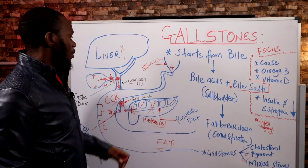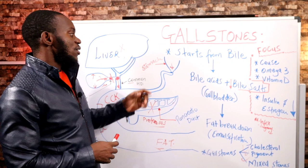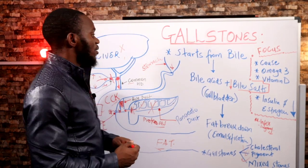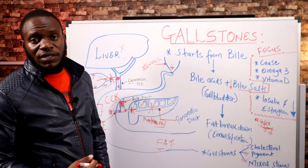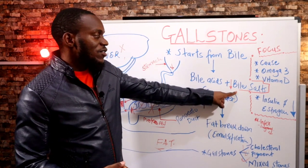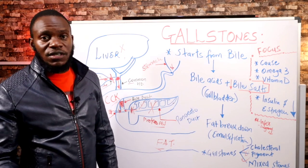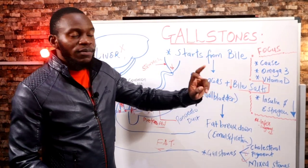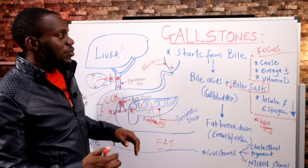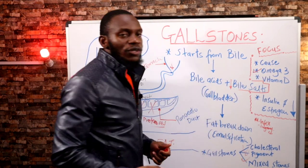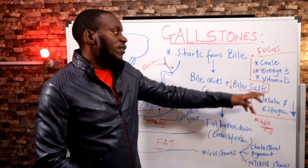Now, if you already have gallstones, what do you do? Remember, bile salts are very important in preventing cholesterol crystallization, which causes gallstones. If you augment bile salts, your chances of getting gallstones are minimal. First, fasting is very important — it helps concentrate bile salts, helps heal the liver, and clears inflammatory conditions. Second, omega-3: eat fatty meat, fatty fish, seafood — all these have high content of omega-3, which is helpful in clearance of gallstones.